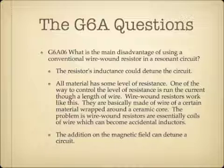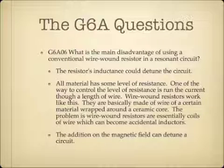What is the main disadvantage of using a conventional wire-wound resistor in a resonant circuit? The resistor's inductance could detune the circuit. This builds off the previous question — how one component may inadvertently act like another. All material has some level of resistance, and one way to control resistance is to add length to a piece of wire. A wire-wound resistor is basically a wire of a certain material wrapped around a ceramic core. The problem is that wire-wound resistors are essentially coils of wire, which is also what an inductor is. So the addition of this magnetic field in the resistor can actually detune the circuit.